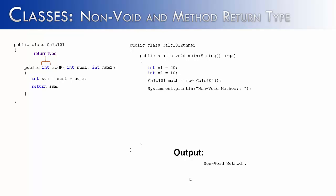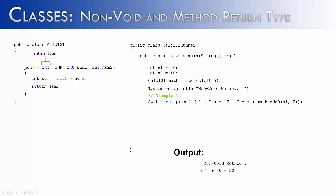Now that we know how a non-void method is constructed, let's look at some examples of how it can be brought back to the program. I have three examples, using the exact same method from the previous slides. The first example is what we did on the last slide: we can bring back math.addR inside of a System.out.println statement so it will actually do something when it comes back. That would print '20 plus 10 equals 30'.